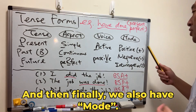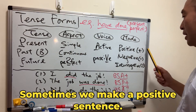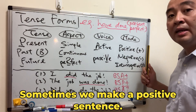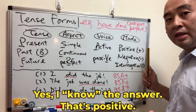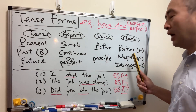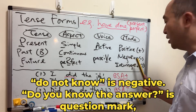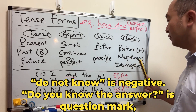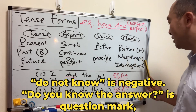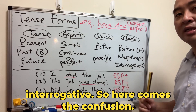And then finally, we also have mode. Sometimes we make a positive sentence — 'Yes, I know the answer,' that's positive. 'I do not know the answer' — 'do not know' is negative. 'Do you know the answer?' is a question mark — interrogative.